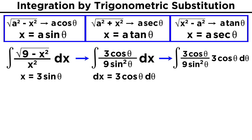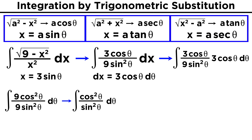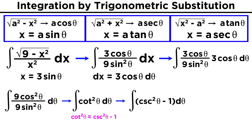Now everything is in terms of theta, and we are ready to integrate. We can multiply the first three cosine theta by the new three cosine theta to get nine cosine squared theta. The nines cancel, and we are left with cosine squared over sine squared, which is cotangent squared. Cotangent squared is not a common integral, so let's try to change the way it is expressed using some identity. The easiest one would be the identity that tells us that cotangent squared is the same as cosecant squared minus one. So we make that change, which is advantageous because cosecant squared can be directly integrated. Since the derivative of cotangent is negative cosecant squared, cosecant squared theta integrates to become negative cotangent theta, and the one must become theta. So we have negative cotangent theta minus theta, plus c.